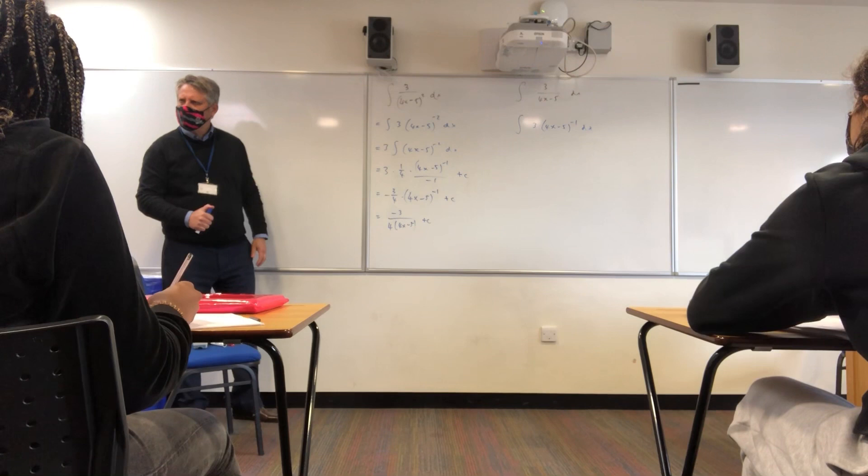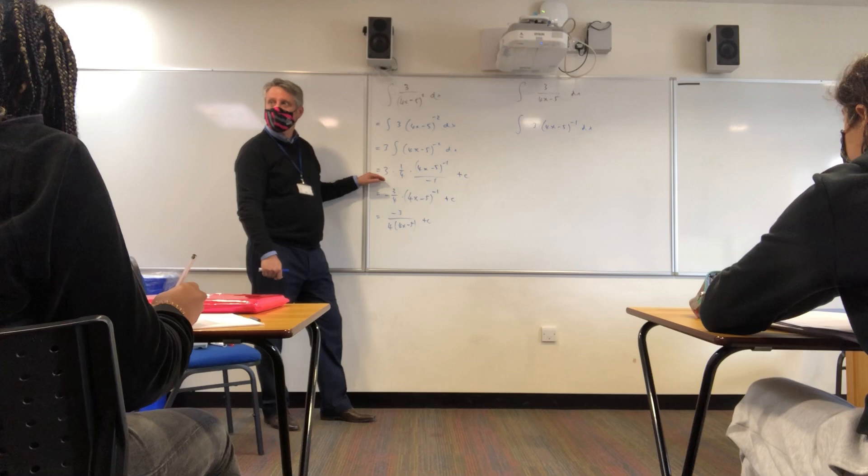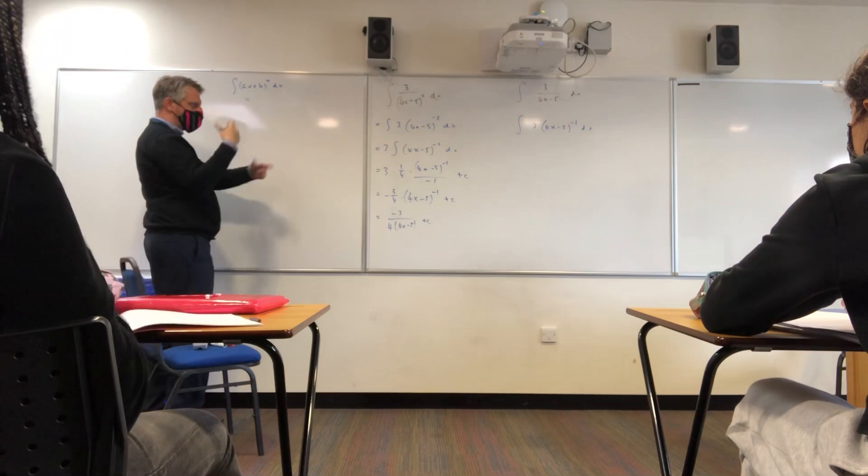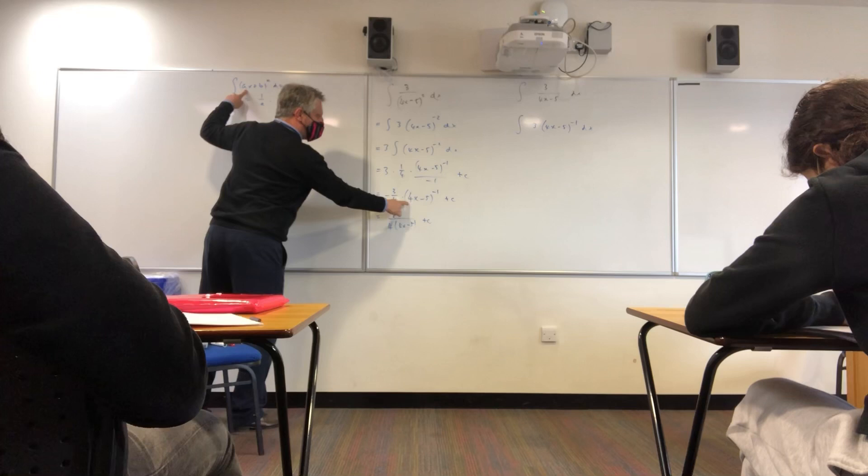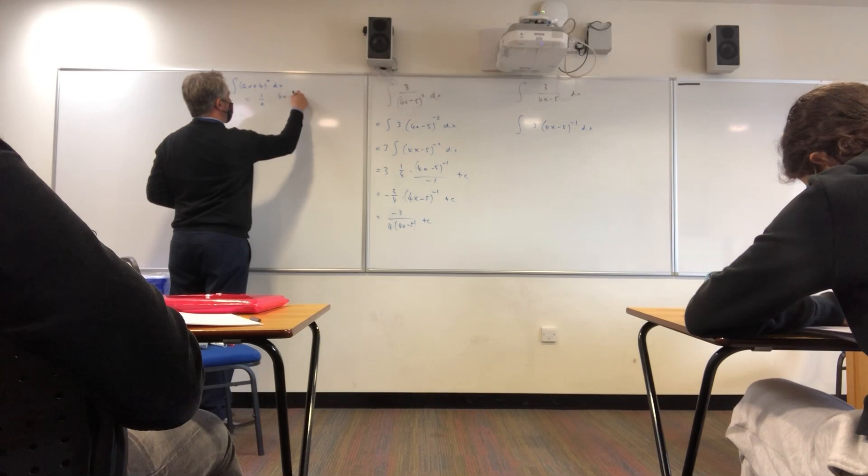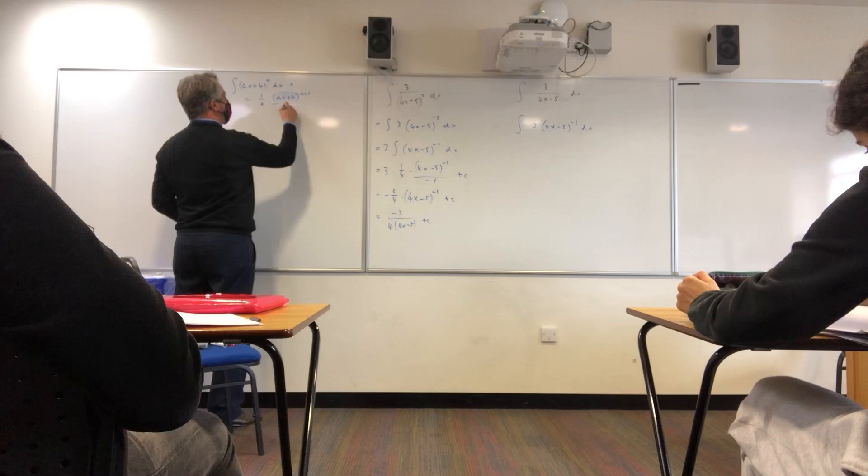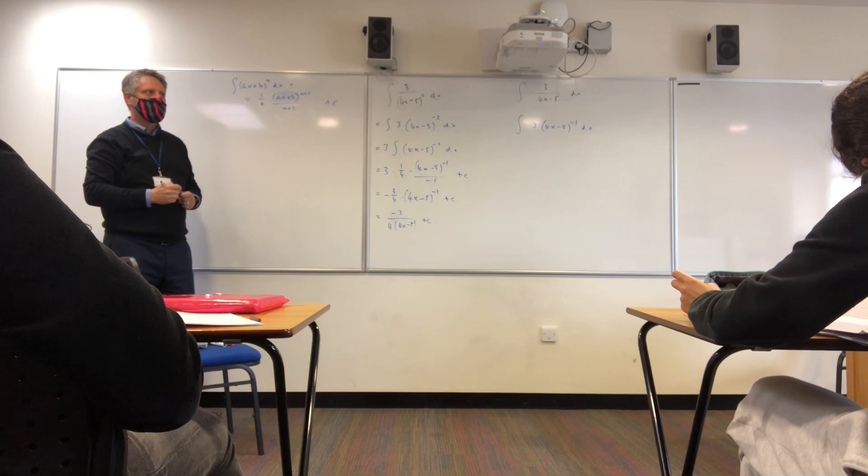Can you explain why this is divided by -1? This stage here I used a formula that we looked at yesterday. The formula was, if you have the integral of (ax + b) to the power of n dx, the formula is 1/a times (ax + b) to the power of (n+1) over (n+1), all of that plus c. That was the formula we had. Remember that?